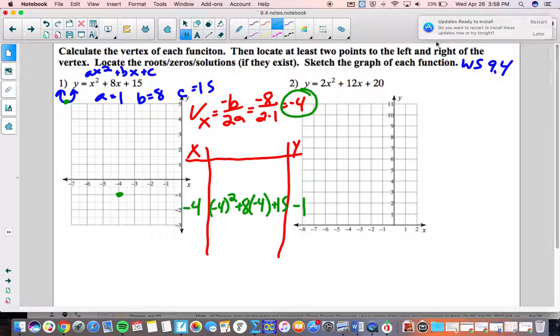Now folks we're going to locate at least two points to the left and the right of the vertex. Why we put our vertex x value in the middle is to go to the left we'd go negative 5 and negative 6, and to go to the right we'd go negative 3 and negative 2. So negative 4 will be the middle number out of these.